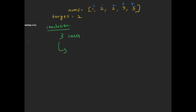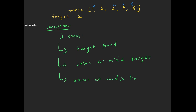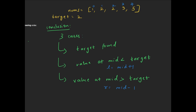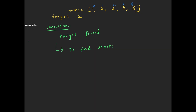To conclude, we have three main cases to consider when updating the left and right pointers. First, when we found the target. Second, what if the value at mid is less than the target? Third, what if the value at mid is greater than the target? For the second and third cases, we search the right subarray when the value at mid is less than the target, so we shift the left pointer to mid plus 1. If the value at mid is greater than the target, we search the left subarray and shift the right pointer to mid minus 1. For the first case, when we have found the target, to determine the first occurrence we continue shifting the right pointer to mid minus 1, and to find the last occurrence we continue shifting the left pointer to mid plus 1.